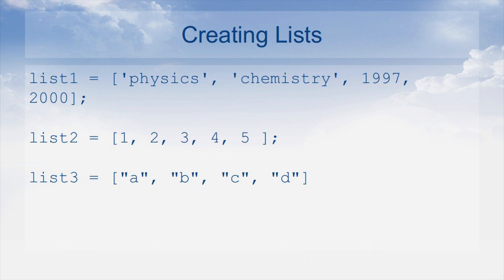I have created three lists. List 1 is a set of items where physics is the first item, chemistry is the second item, 1997 is the third item, and 2000 is the fourth item. Physics and chemistry are string type, whereas 1997 and 2000 are numbers. In list 2, all items are numbers separated by comma. In list 3, we have 4 characters separated by comma.